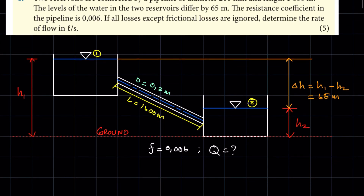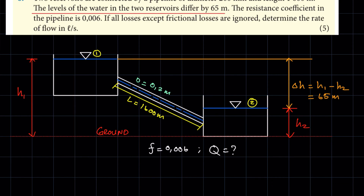Now as you see, after drawing and labeling the diagram of this question, you have two reservoirs and they're connected by a pipeline. The pipe is 0.2 meters in diameter and has a length of 1,600. We are going to have H1 and H2, both referenced from the ground. We don't necessarily need the values of H1 and H2 as long as we have the value of the difference in water levels for the first and second reservoir, which is 65 meters.